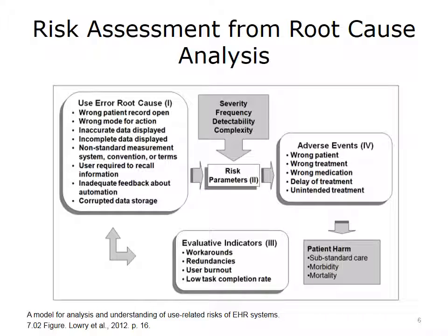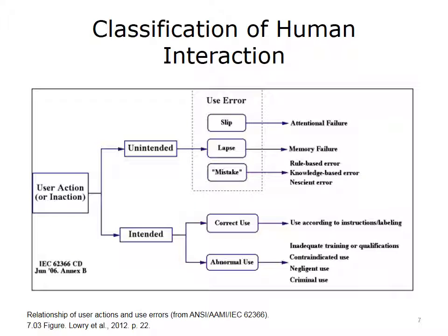This slide illustrates how the Root Cause Identification taxonomy can be used as part of a risk assessment that combines severity and frequency to predict the probability and severity of an adverse event. This figure illustrates a categorization of the human interaction contribution to a medical error that leads to different types of failure.